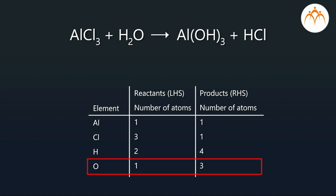Initially in the reactants, the number of oxygen is one and the number in products is three. So, to balance, we will multiply by three in the reactant side.